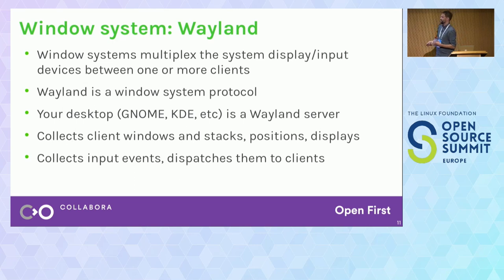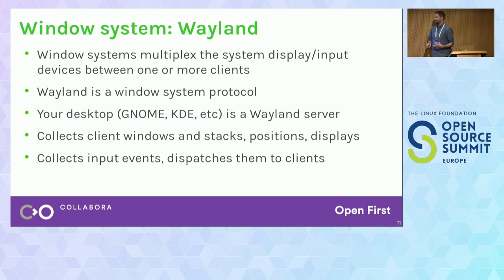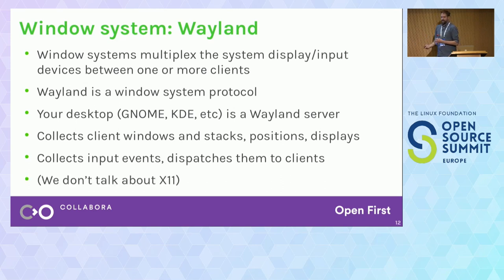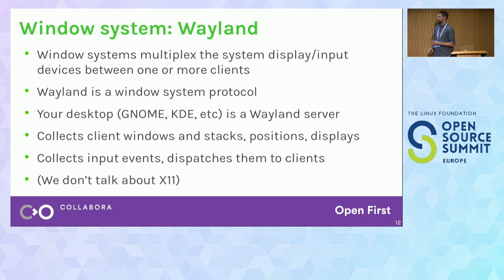The main visible function of the window system is that it collects all client windows together, stacks them so bits are on top of each other, positions them, and gets them out to the display. Similarly, it decides where keyboard events go and what to do with mouse movements. There's a vicious rumor that something called X11 existed — especially in 2022. Wayland does have an X compatibility layer, which is just the full X server routed sideways into the Wayland server. That was really hard to implement — just don't try to do X11 if you can.